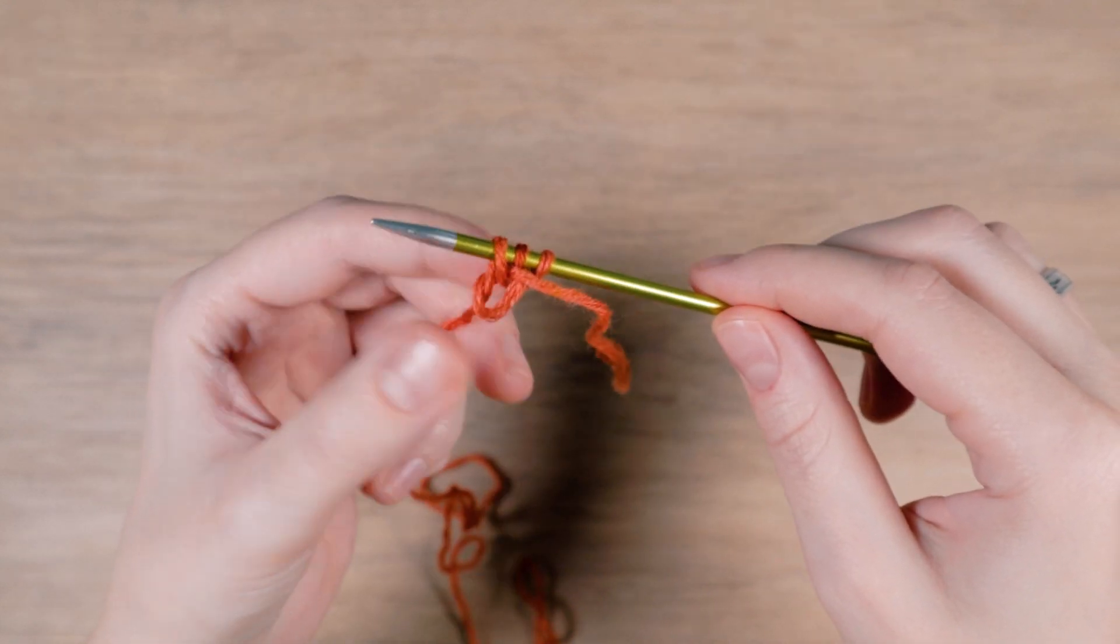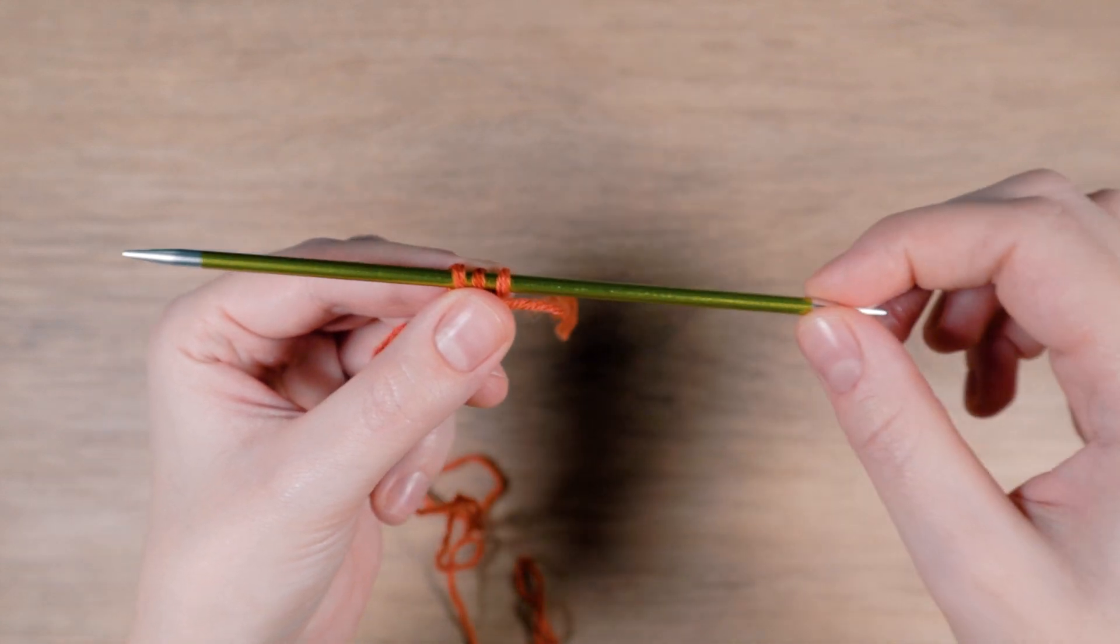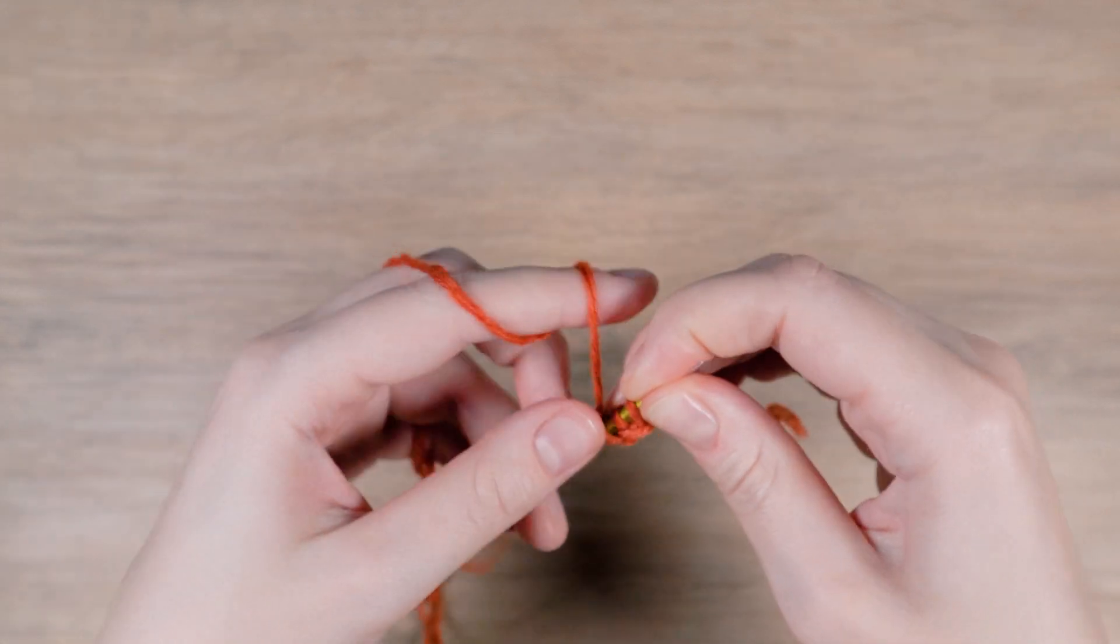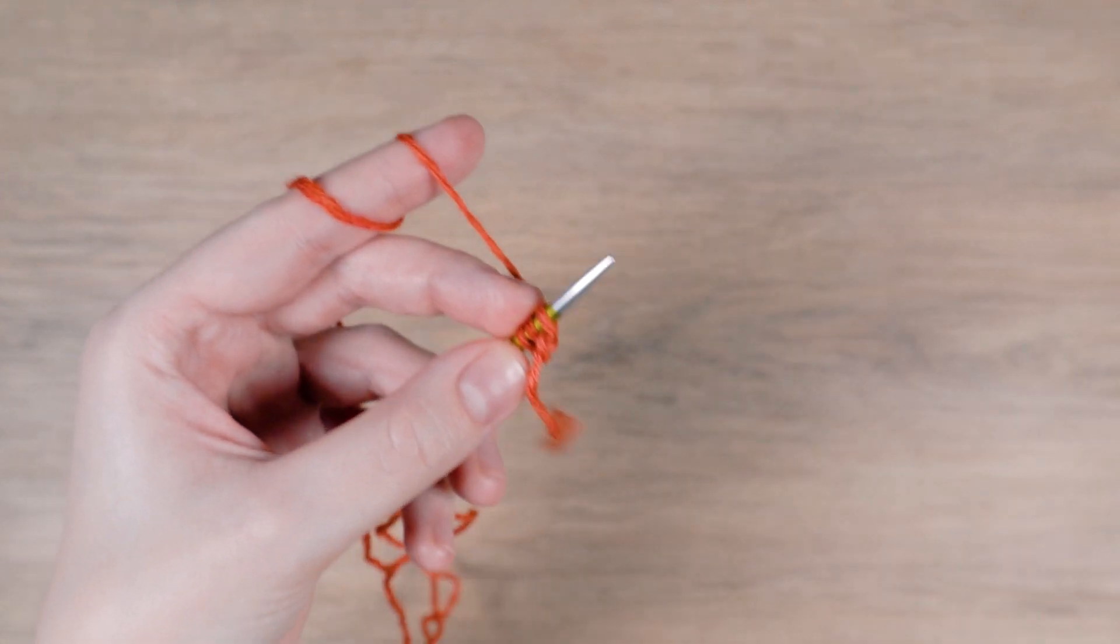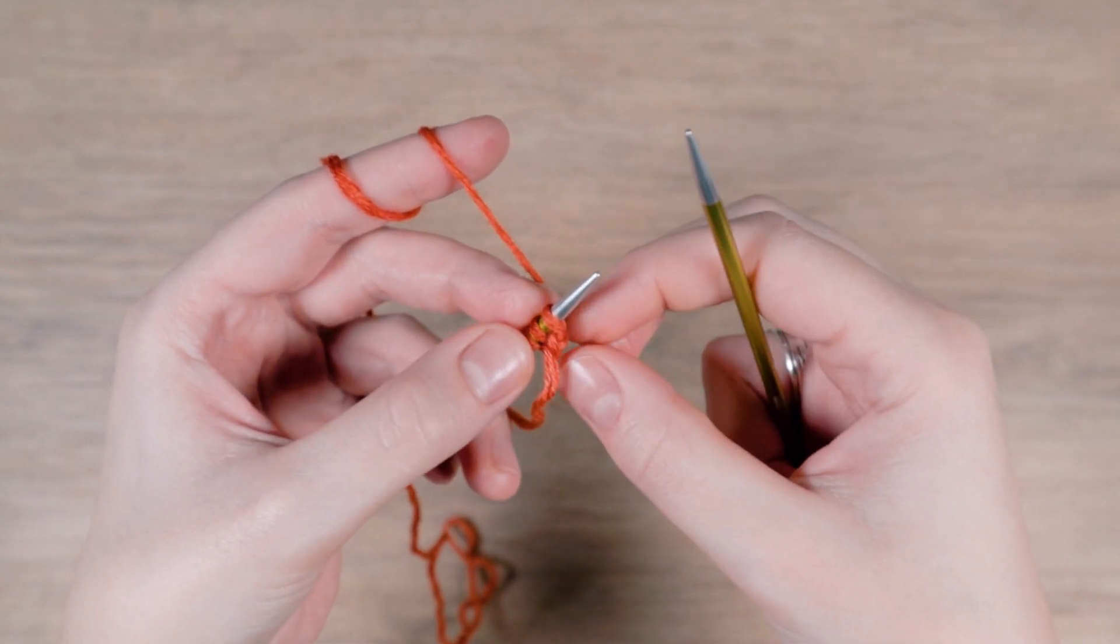Now instead of turning like we usually do, we just slide the stitches over to the other end of the needle. If you're not using DPNs simply slip the stitches back onto the other needle. Knit across the stitches.